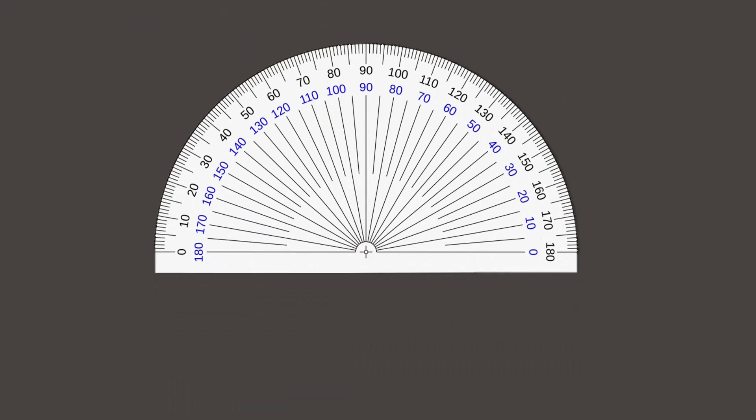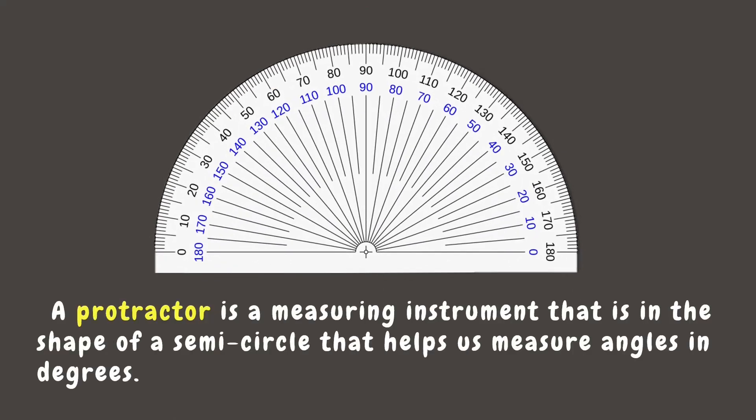This is a protractor. It is a measuring instrument shaped like a semicircle. We use it to measure how wide or narrow an angle is. A protractor has two parts, the outer scale and the inner scale, both ranging from 0 to 180 degrees. Let's use the inner scale as an example.